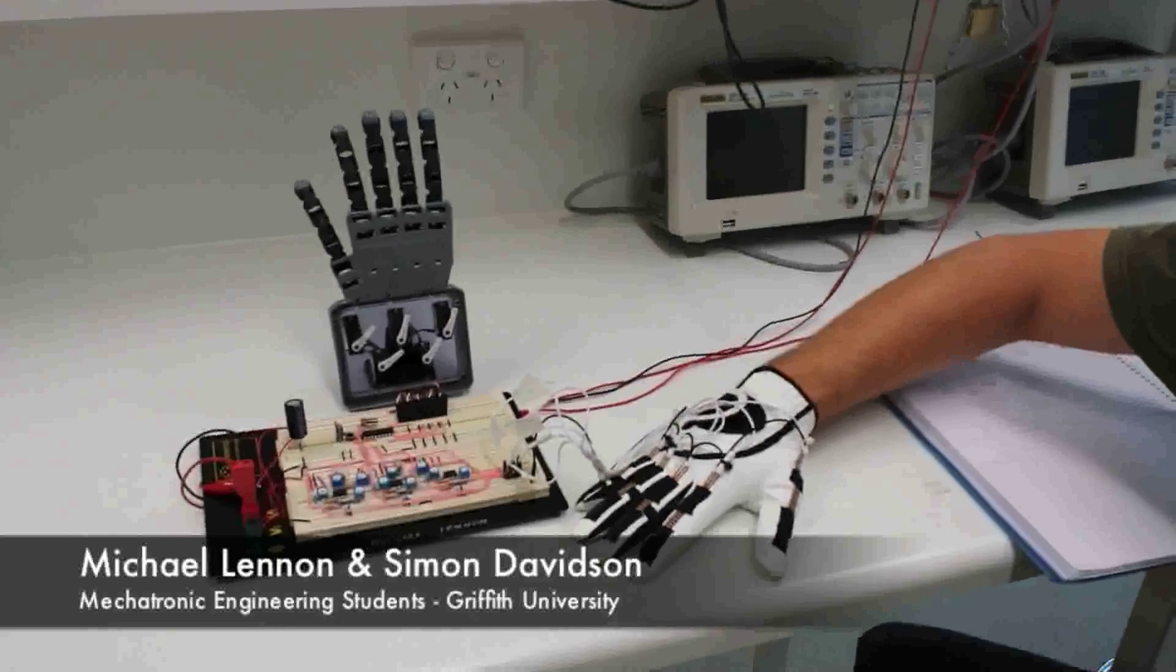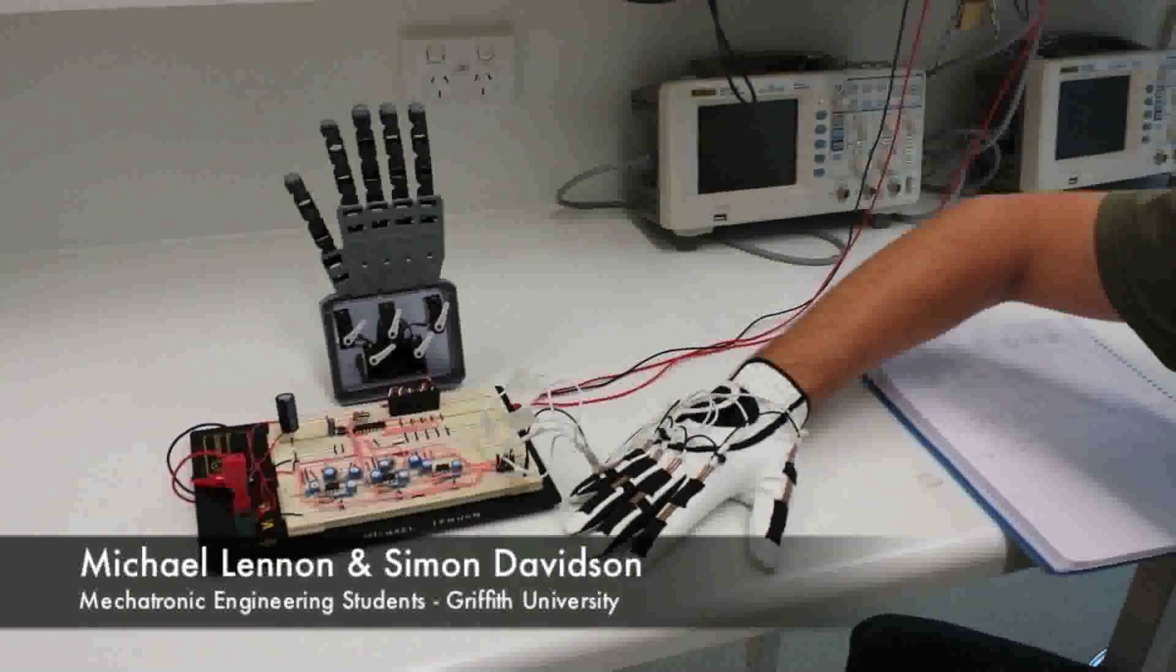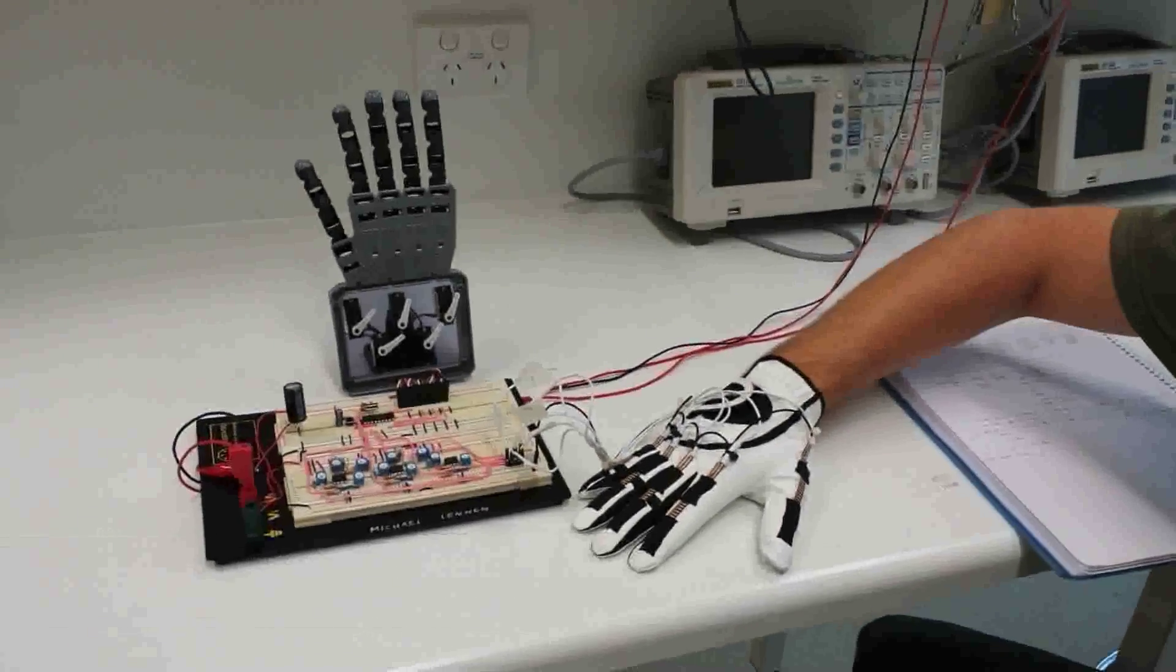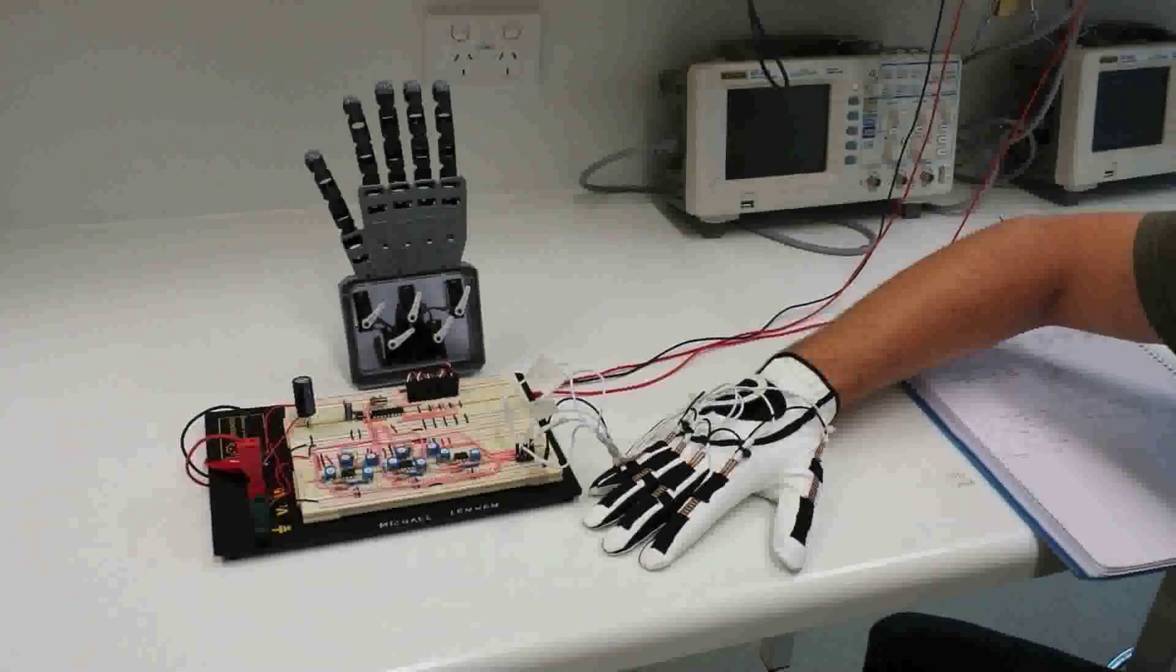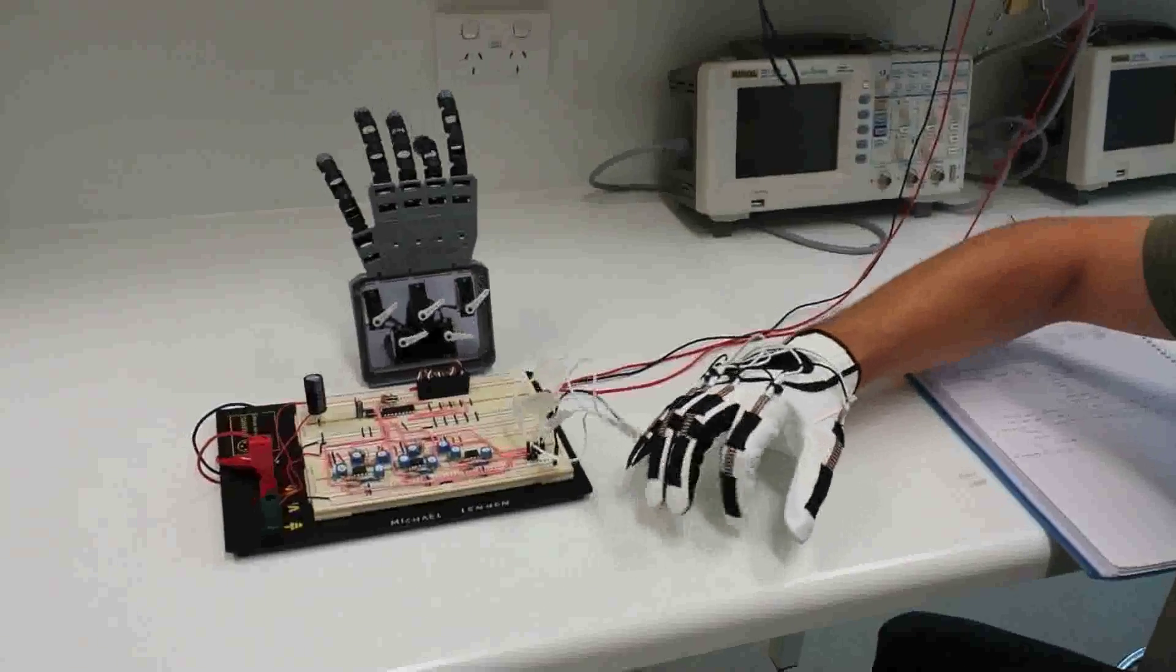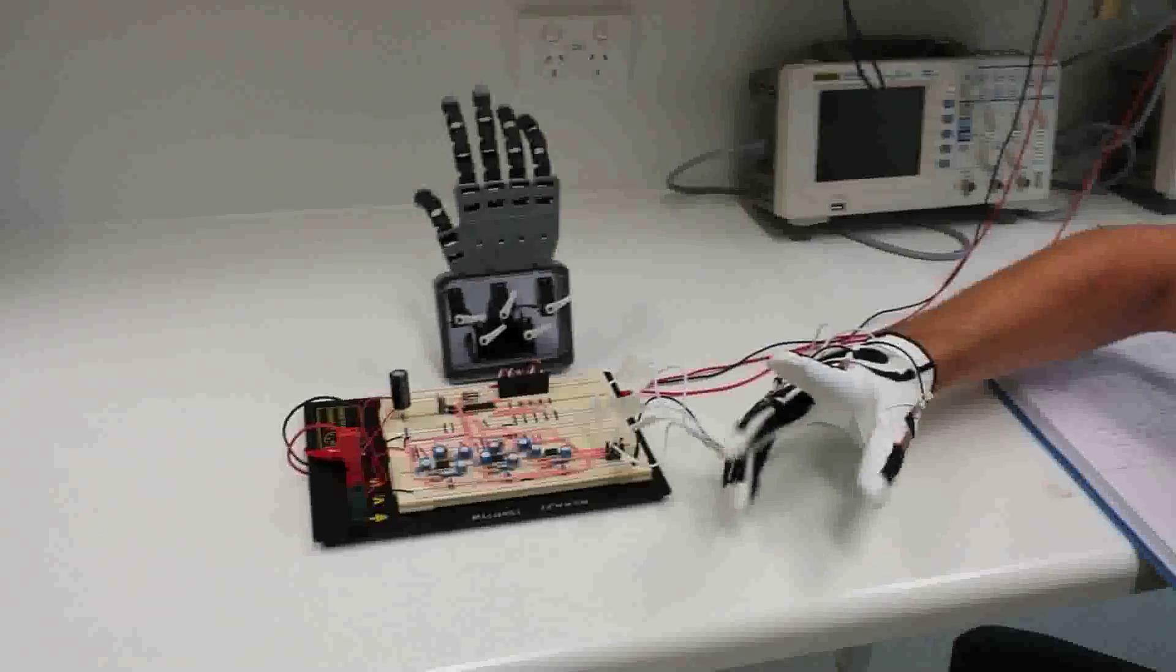Hi, I'm Michael Lennon and I'm Simon Davidson. We are mechatronic engineering students at Griffith University Gold Coast. This is our robot hand. It mimics the motions of a human hand.